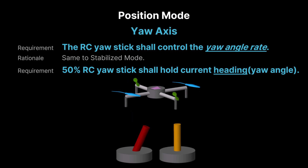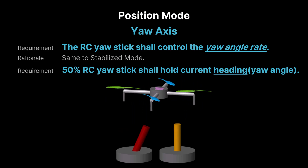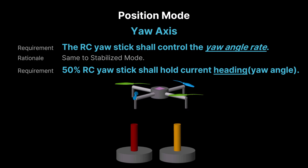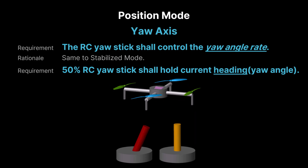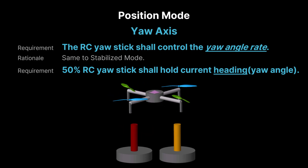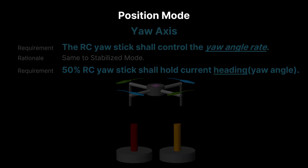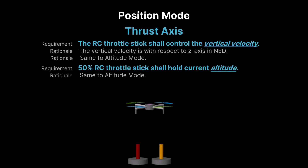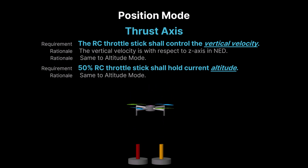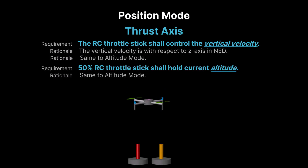In the yaw axis of position mode, same as stabilized mode, the RC stick controls the quadcopter's yaw angle rate, allowing the operator to rotate the drone left or right around its vertical axis. Releasing the stick allows the autopilot to automatically hold the current heading, i.e. yaw angle. In position mode, same as altitude mode, the RC throttle stick controls the quadcopter's vertical speed. Pushing it above 50% causes the drone to ascend, while pulling it below 50% makes it descend. Holding the stick at 50% maintains the current altitude.